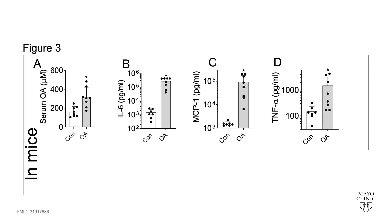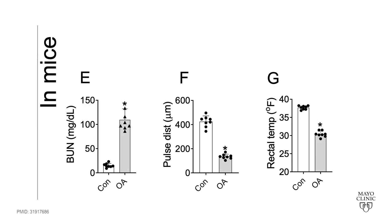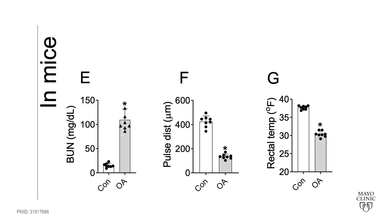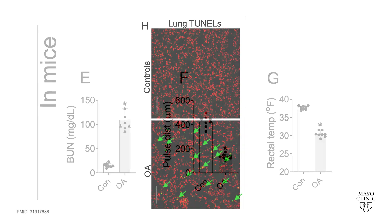An injection of oleic acid triggered severe inflammation, caused renal failure seen as an increase in BUN, and caused shock, noted as a drop in carotid artery pulse distension, along with causing hypothermia and lung injury.